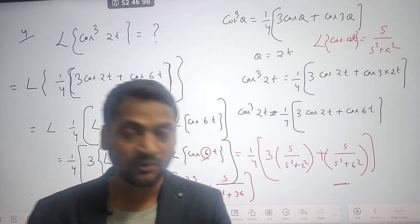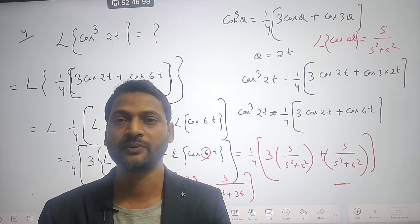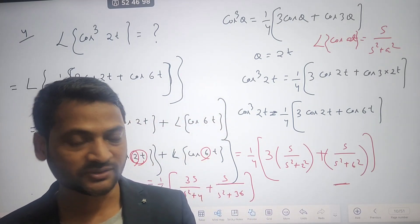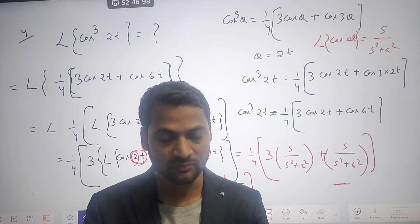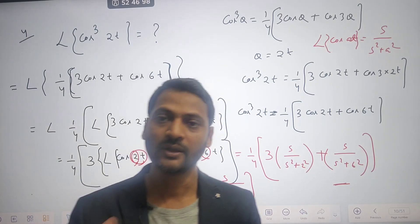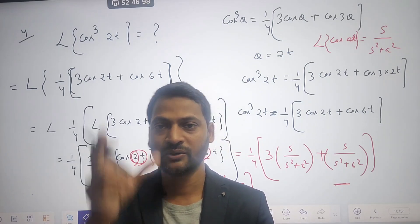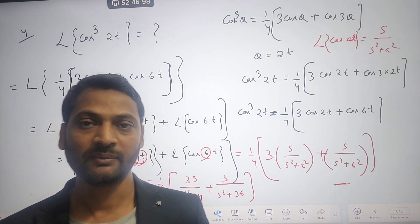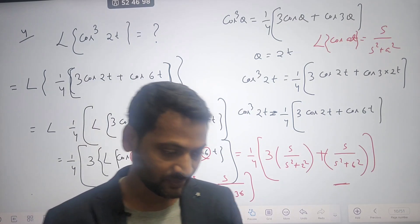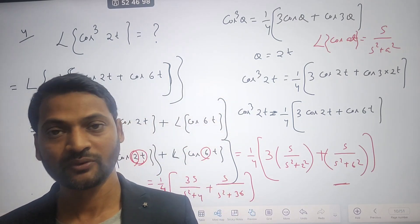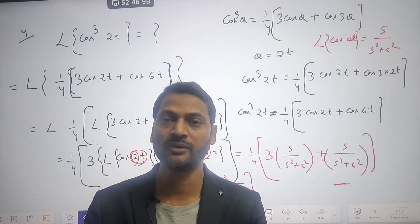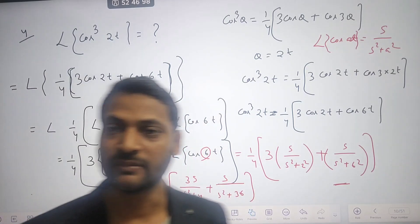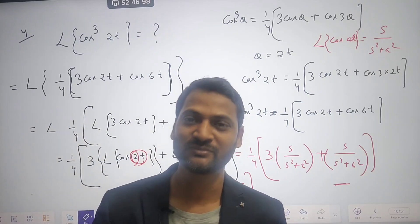Today we discussed the Laplace transformation of square trigonometric functions and cube trigonometric functions. Remember: there is no direct formula for square or cube functions — we must first convert them to normal sine or cosine form. Also remember the 7 basic Laplace formulas: Laplace of a constant, Laplace of e^(at), Laplace of cos(at), Laplace of sin(at), Laplace of hyperbolic functions, and Laplace of t^n. With that, I am ending this lecture. Hope you understood. Thank you so much for watching.